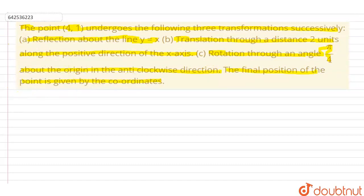We have to find the coordinates of the final point. Initially, we have the point (4,1). First, we have to find the coordinates after reflection from the line y equals x. Now, we know that after reflection from the line y equals x, the coordinates of the points are reversed. After this reflection, the point will become (1,4).